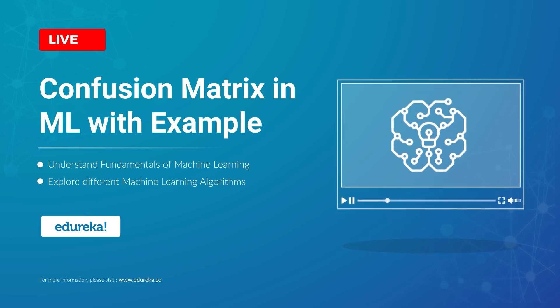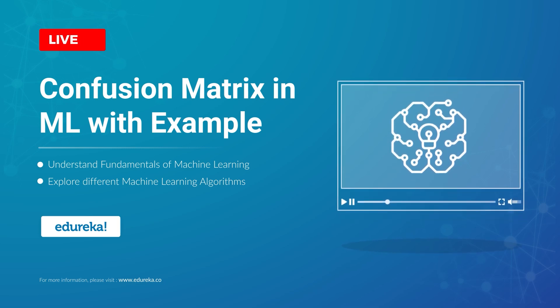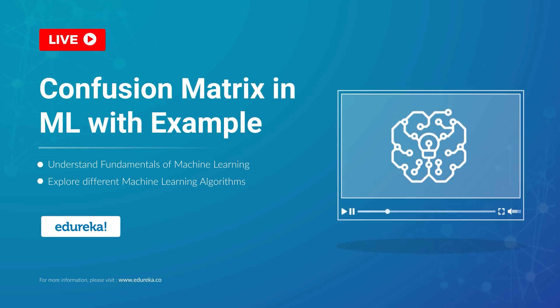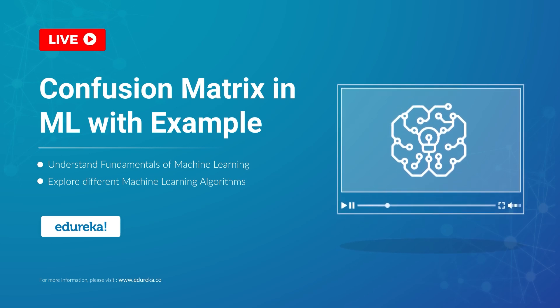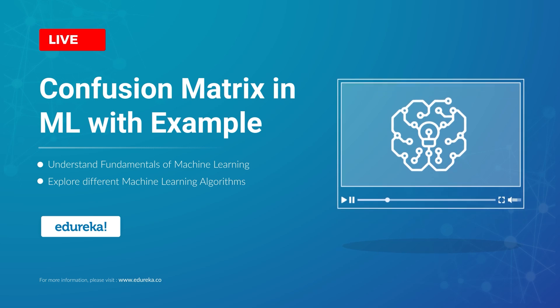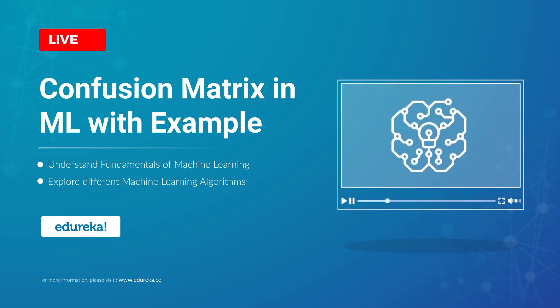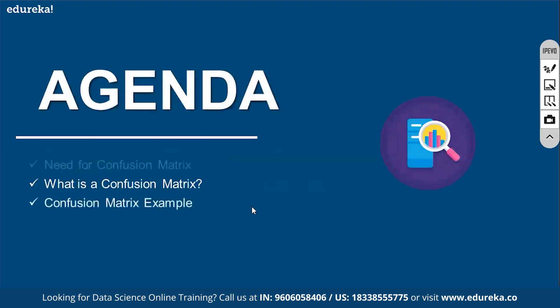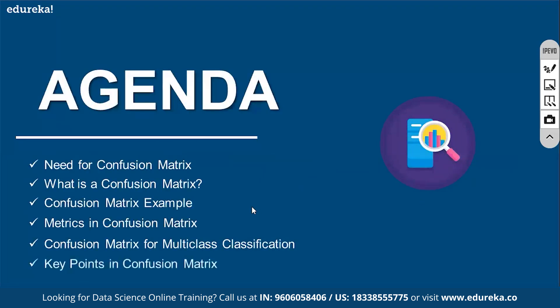Welcome to our webinar session. Today we're going to talk about one of the concepts and metrics called confusion matrix in machine learning, along with some examples. The agenda for today's discussion covers what is confusion matrix, some examples, the different metrics available under confusion matrix, different measures, and multi-class classifications.